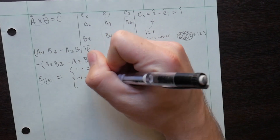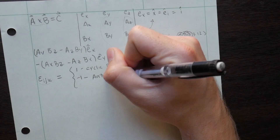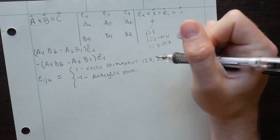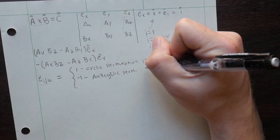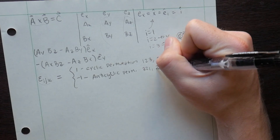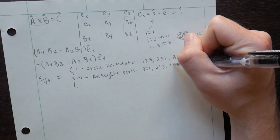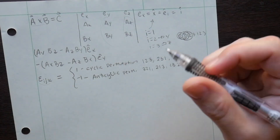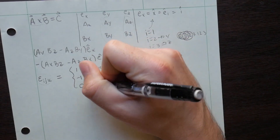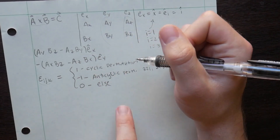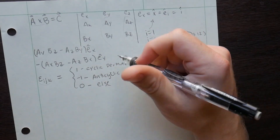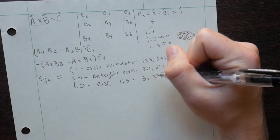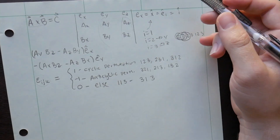This symbol is minus 1 for anti-cyclic permutations — meaning if it goes backwards. So if we get 3, 2, 1 or 2, 1, 3 or 1, 3, 2 — if those are the combinations of i, j, k — this symbol is minus 1. Lastly, this symbol is 0 for anything else. Typically what this means is if any of the indices repeat, meaning if we have like 1, 1, 3 or 3, 1, 3 or something like that. If any of them repeat, this symbol is 0.